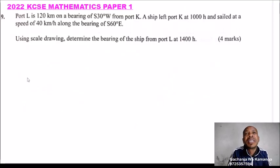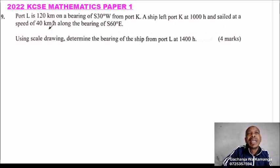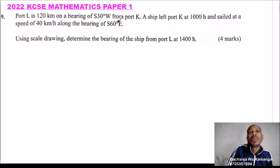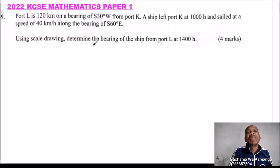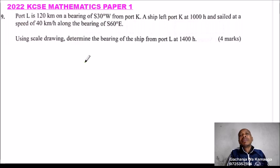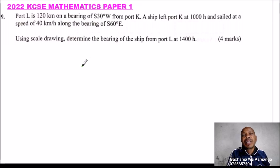2022 KCSE Mathematics Paper 1, Question 9. We are told a port L is 120 km on a bearing of South 30 degrees West from port K. A ship left port K at 10:00 hours and sailed at a speed of 40 km per hour on a bearing of South 60 degrees East. Using a scale drawing, determine the bearing of the ship from port L at 14:00 hours.